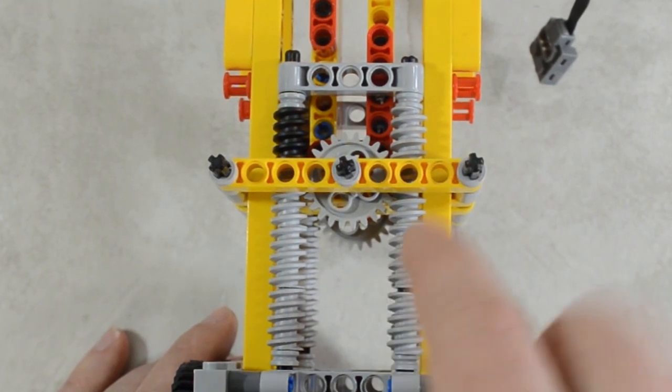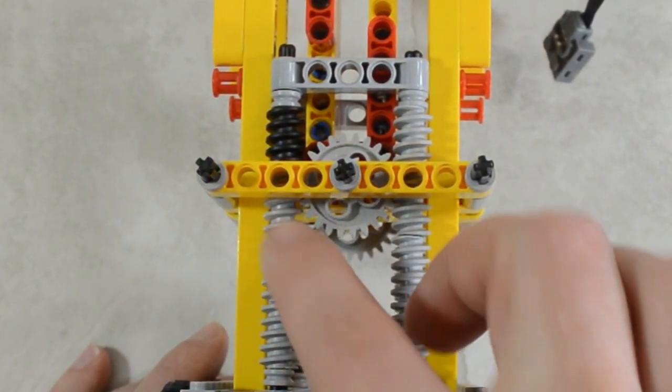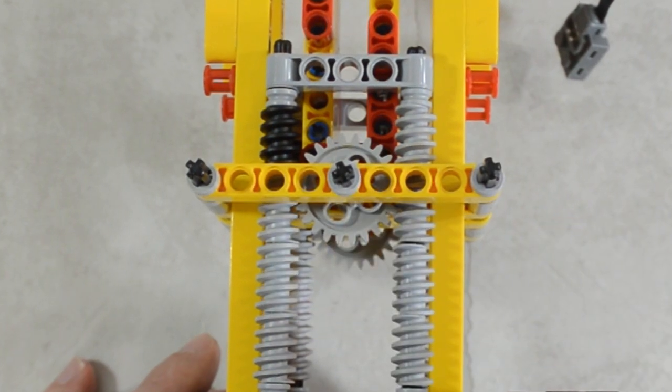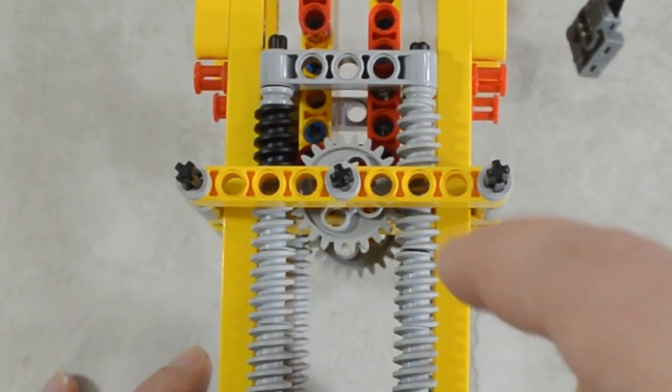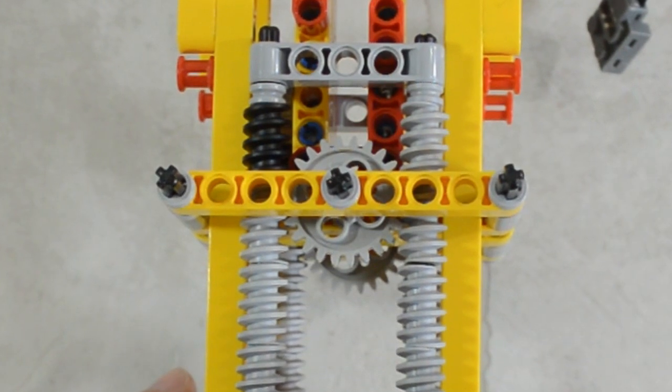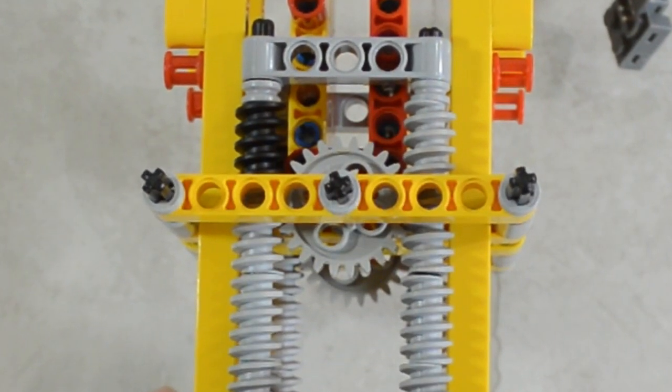But because we have both worm gears trying to push on that gear in opposite directions, the gear cannot turn, so it's only going to be going straight up.